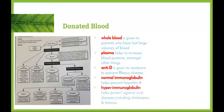Hyper immunoglobulin helps to protect against viral diseases such as chickenpox and tetanus. These are given to patients with low immune systems whose immune response isn't able to fight off these viruses themselves, so they can be given these substances in order to give them a bit of a hand.